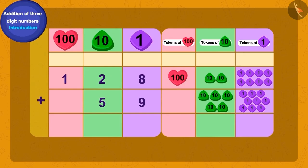Is this correct children? We have a total of 17 tokens of ones. Now how do we write this? We can add 10 of ones tokens and get one token of tens. How many ones tokens left? We have seven ones tokens left.